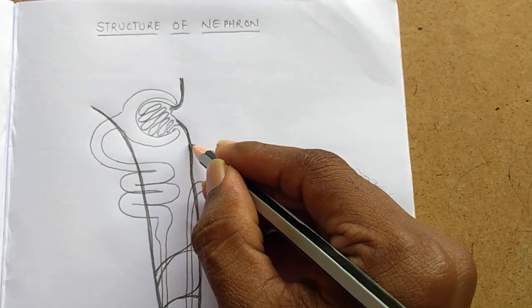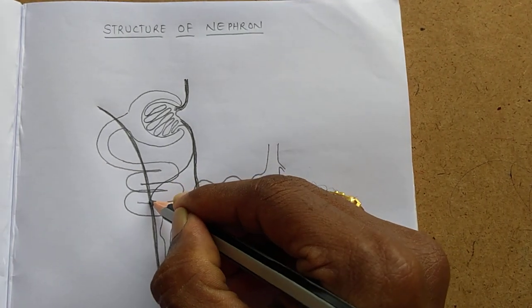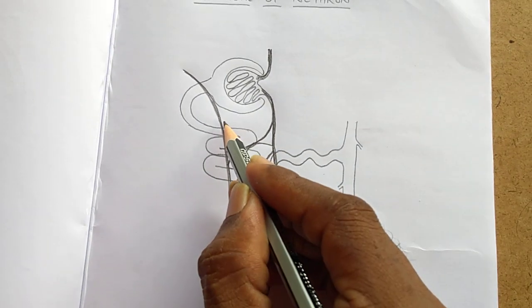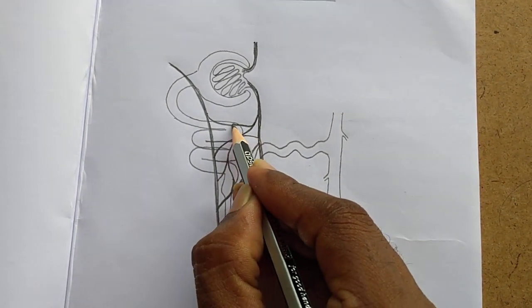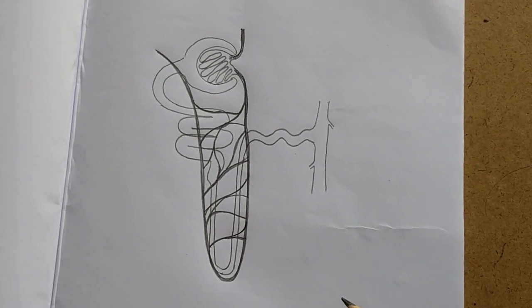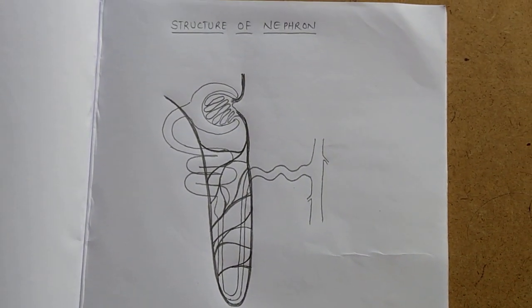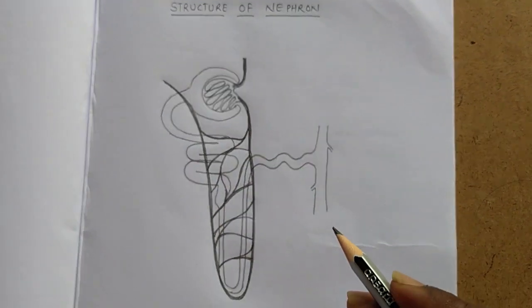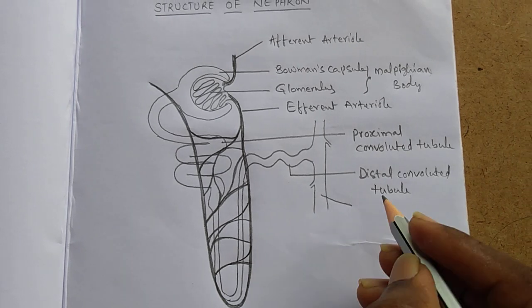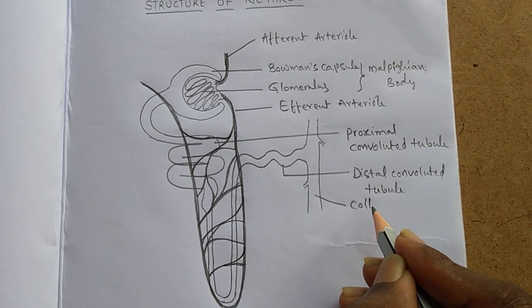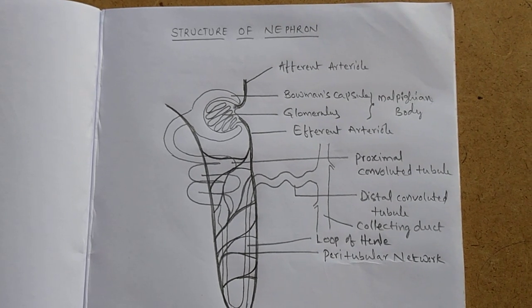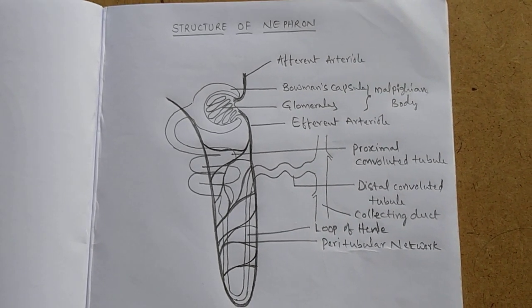And here we have to draw the peritubular network. Now we complete the labeling, and the diagram has been completed. Thank you for watching.